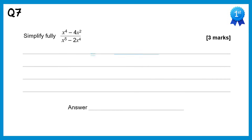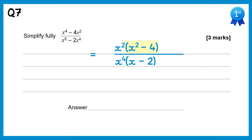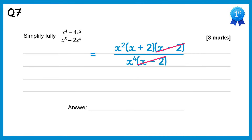If we factorise the top of this one, we get x squared lots of x squared minus 4, and on the bottom x to the 4 times x minus 2. On the top, x squared minus 4 can be factorised again — it's the difference of two squares, so we replace it with x plus 2 times x minus 2. We can now cancel the x minus 2 factors, and also cancel the x squared on the top with 2 of the x's from the bottom so the power reduces from 4 to 2. So we end up with x plus 2 over x squared.